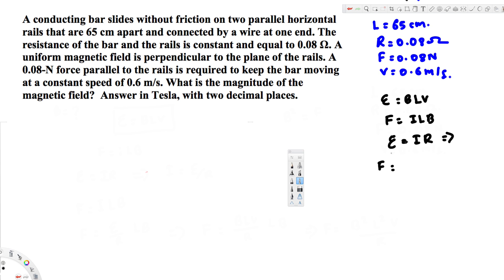We can say I equals EMF divided by R. From that we can create the equation: instead of I, we can put EMF over R. So this is going to be EMF over R times LB.